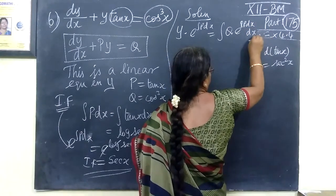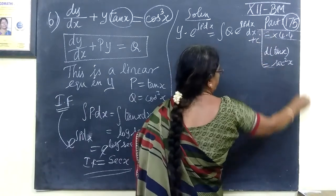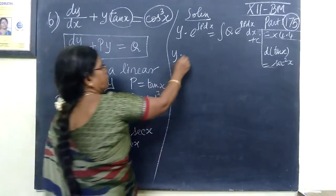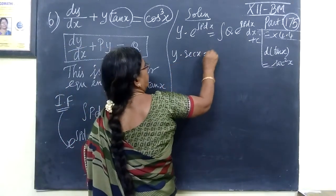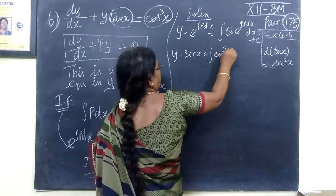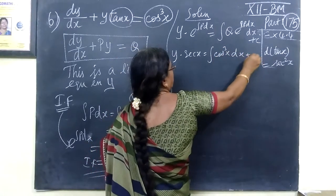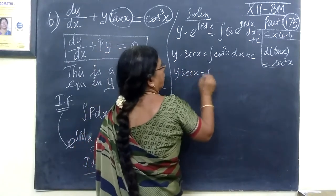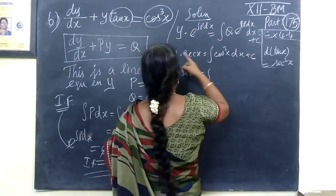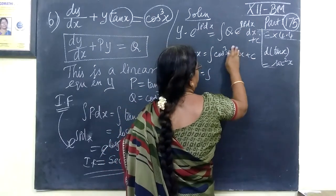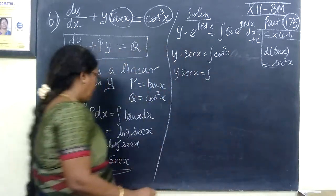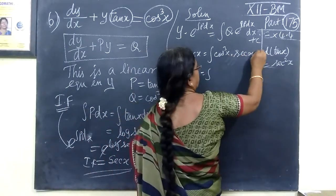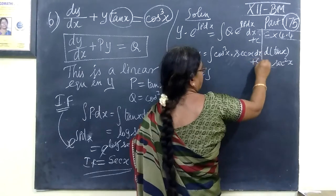So y into sec²x, so y into secant x equal to integral cos²x dx. So y secant x equal to x. So cos²x equal to... In that method secant x dx.